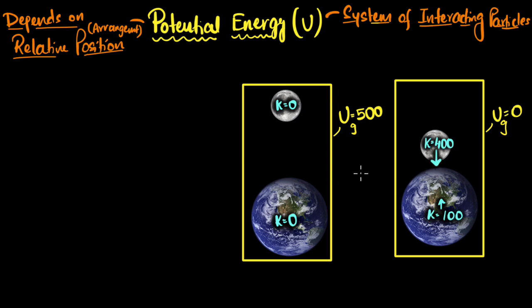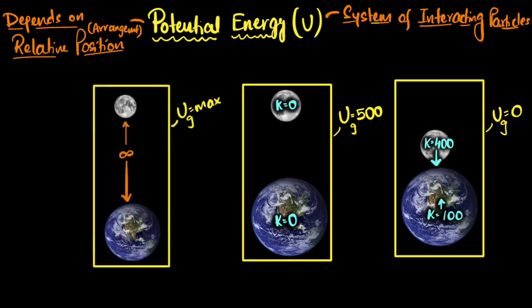By that logic, when particles go farther away — moving against the gravitational attraction — they slow down, kinetic energy reduces, and potential energy increases, just like when you throw a ball up and it slows down. So the farther they go, the higher the gravitational potential energy. The gravitational potential energy is maximum when they are the farthest away — meaning at infinite distance apart — so the maximum gravitational potential energy occurs when the particles are infinitely far away.